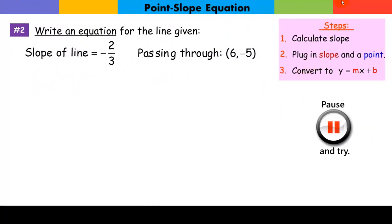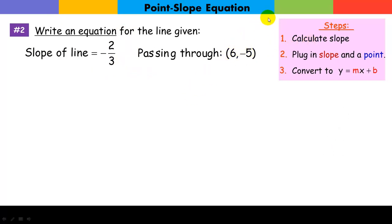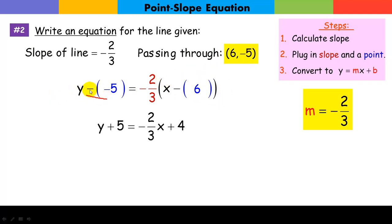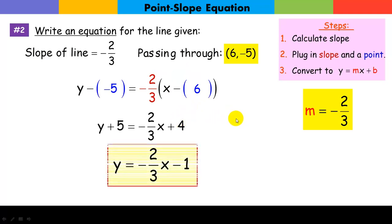Let's try another one. We have a slope of negative 2 over 3, and our one point — that's all we need for the point-slope equation, the slope and a point. So we plug in the slope and carefully plug in our point, keeping in mind which is x and which is y. Notice y minus a negative 5 becomes y plus 5. Distributing negative 2 over 3, and negative 2 over 3 times negative 6 gives a positive 4. Subtract 5 from both sides: our line has slope negative 2 over 3 and y-intercept negative 1.